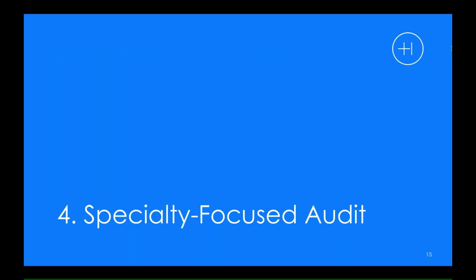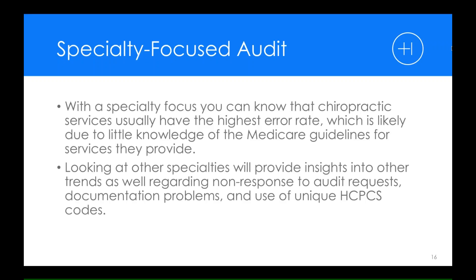Number four is the specialty-focused audit. In the specialty-focused audit, it can help you to know what services have a high error rate. For example, chiropractic services historically have a high error rate, likely due to little knowledge of Medicare guidelines for those services, or lack of skillful people helping with determining the correct code set, how it is to be used, and what the coverage guidelines are. Looking at other specialties helps provide insight into those trends and also helps with documentation problems and the uniqueness of codes that would need to be used.